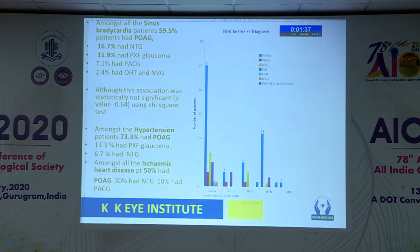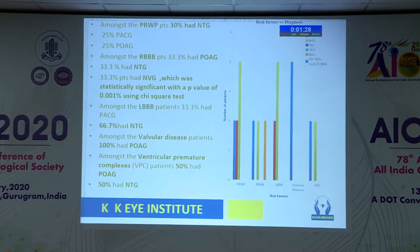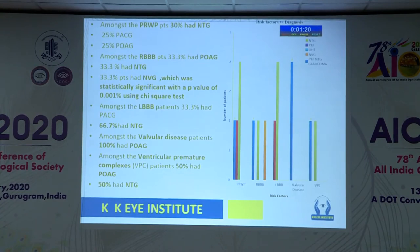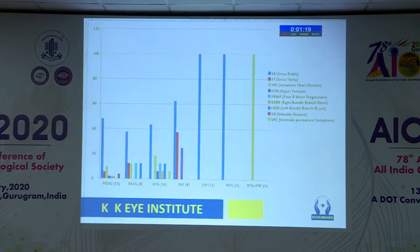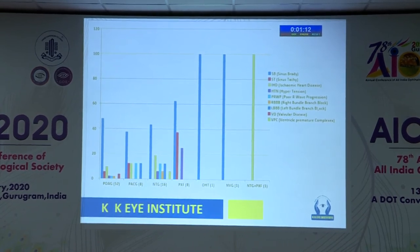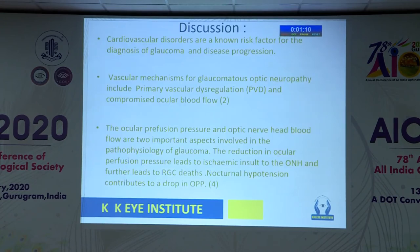However, there was no statistical correlation which we could establish between these two. Among the hypertensives, 73.3 percent had POAG. Among the IHD patients, again 50 percent had POAG. Coming to the bundle branch blocks, among the RBBB patients, 33.3 percent had POAG, followed by NTG and NVG. This is the distribution based on the disease. As you can see, the most commonly occurring cardiac condition was sinus bradycardia across almost all types of glaucomas.